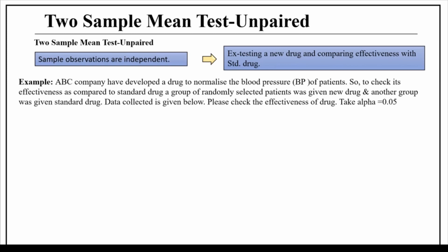Let's understand it with an example. An ABC company has developed a drug to normalize blood pressure (BP) of patients. To check its effectiveness compared to a standard drug, a group of randomly selected patients was given the new drug and another group was given the standard drug. The data collected is given below. We will check the effectiveness of the drugs with alpha equal to 0.05.